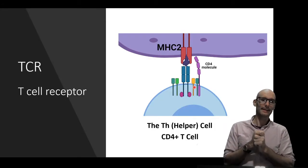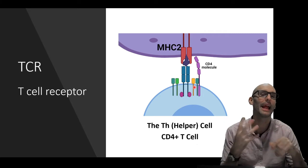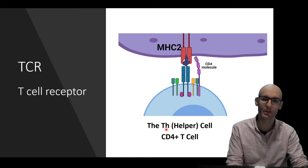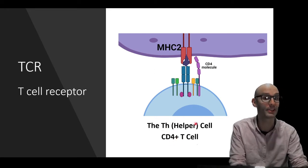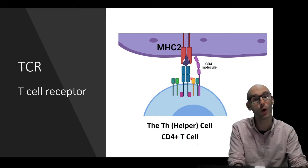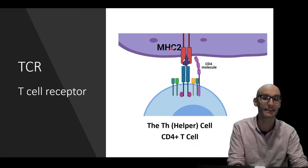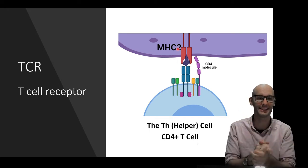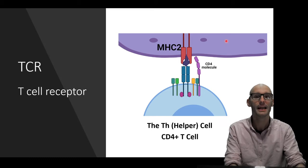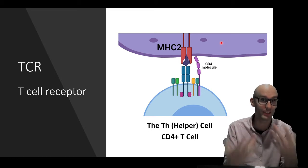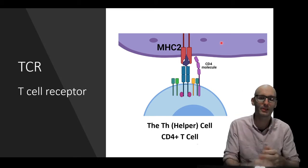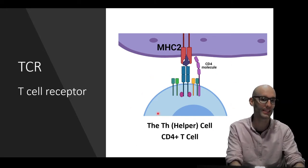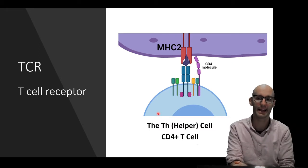We need antigen presentation. We're talking about T helper cells, that's always going to happen. We're talking about CD4 positive cells, and the CD4 integral membrane protein recognizes the MHC2 molecule, and the MHC2 is the professional antigen presenting cell. So this cell up here is probably a macrophage or a dendritic cell. It's a professional antigen presenting cell, so it's got an MHC2 molecule. So this is the first step that we need in a Th17 response.